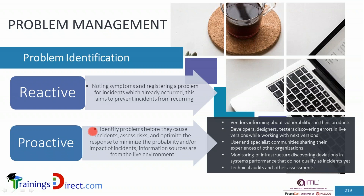In proactive problem identification, the analysis is done before an incident occurs in order to prevent it. The causes of incidents are identified before an incident happens, so some proactive risk assessment of the environment may need to be done to minimize the probability and impact of potential incidents. There may be several information sources from the live production environment — for example, vendors may inform about vulnerabilities in their products, such as a software upgrade that may be prone to certain defects which haven't occurred yet but might occur in the future.